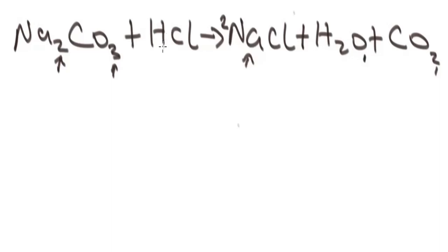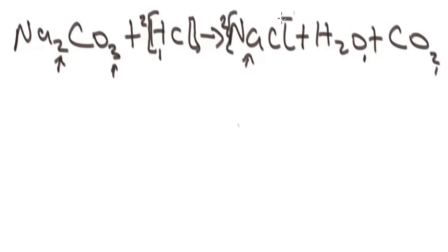Let's check hydrogen. Hydrogen at the left, we have one. At the right, we have two. So we need to balance hydrogen — we put two here. Now note that any number we put behind a compound, we multiply the elements that make up that compound. So this two at the back of HCl is multiplying both hydrogen and chlorine, giving us two atoms of chlorine. At the right, we also have two atoms of chlorine because the two at the back of sodium chloride multiplies both sodium and chlorine.